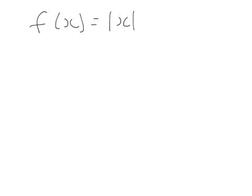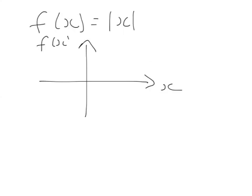Let's consider the function mod x and think about the graph. Drawing a diagram with x and f(x) axes, the domain is any real number and y values are the range. The modulus of 1 is 1, of 2 is 2, of 3 is 3, of 2.5 is 2.5 — this part of the graph goes up linearly. The modulus of minus 1 is 1, minus 2 is 2 — so this is the graph of f(x) equals mod x.